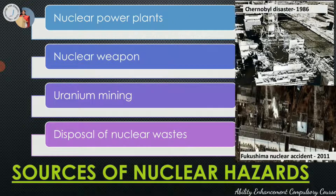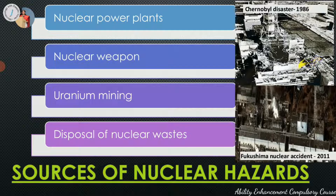Two major nuclear energy accidents in the world are rated at 7, which is the maximum severity on the International Nuclear Event Scale. The first is the Chernobyl disaster, which happened at the Chernobyl nuclear power plant in North Ukraine in 1986, at that time part of the USSR.